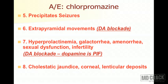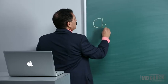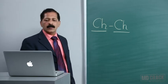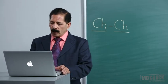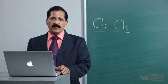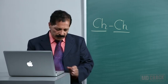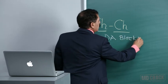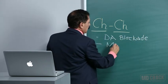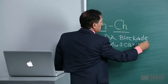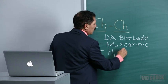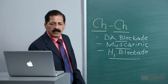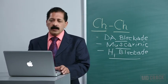Chlorpromazine can produce cholestatic jaundice - remember 'CH' in chlorpromazine and 'CH' in cholestatic jaundice as a mnemonic. It can also produce corneal or lenticular deposits. All these adverse effects can be explained on the basis of: number one, dopaminergic blockade; number two, blockade of muscarinic receptors; and number three, blockade of histaminergic receptors (H1 blockade). Remember these three receptors to differentiate the adverse effects.